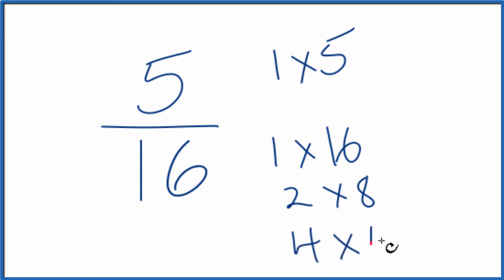4 times 4, and that's it for 16. So we want to find this common multiple between 5 and 16, the greatest common multiple.